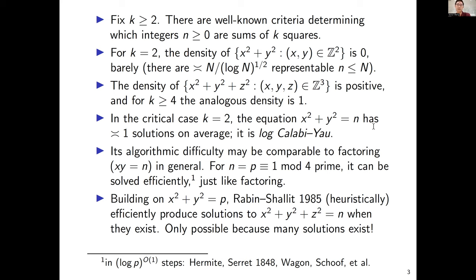Let me briefly discuss the algorithmic point of view. The algorithmic difficulty of solving x² + y² = n is perhaps comparable to another famous two-variable quadratic equation: the factoring equation, namely finding non-trivial x and y such that xy = n. Just like factoring, in special cases this equation can be efficiently solved in polynomial time—for instance if n is a prime that can be represented as a sum of two squares, then you can find x and y efficiently using continued fractions, elliptic curves, or other tools.